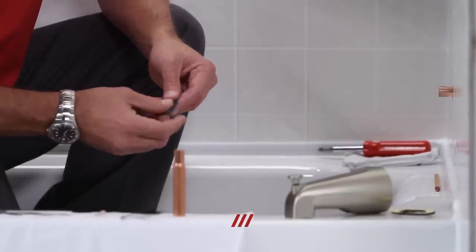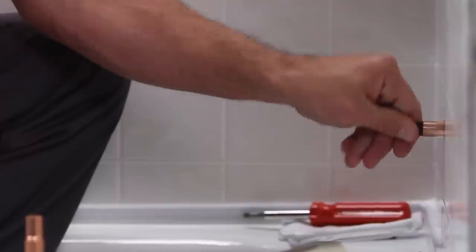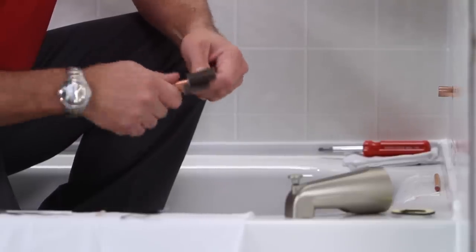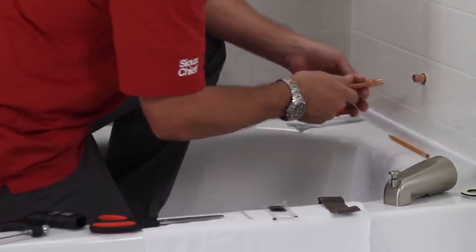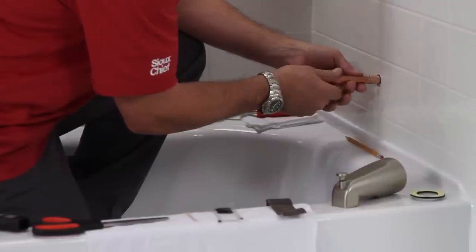Prep the existing copper tube by using the sand cloth to thoroughly clean the inside and outside of both tubes. After the copper tube has been prepped, dry fit the extension into the existing tube.